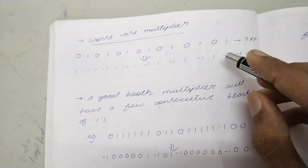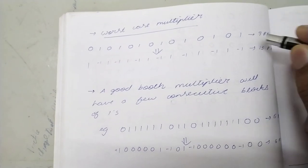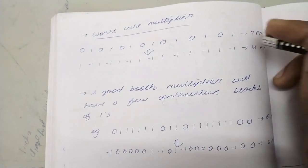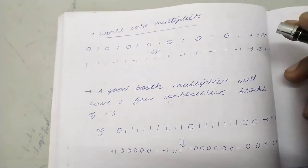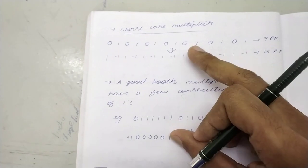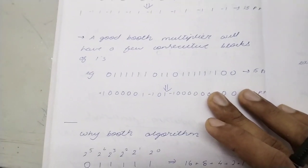And the Booth multiplication, how many do we have? According to that, it's 13 partial products. So the Booth algorithm has more partial products than 7, than the normal multiplication. So that creates the worst case multiplier. And the Booth algorithm is not as efficient as it should be.